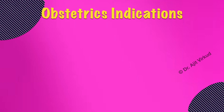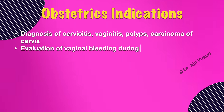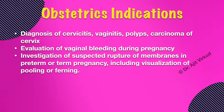Key obstetric indications for per speculum examination include diagnosis of cervicitis, vaginitis, or pregnancy-related cervical lesions like polyps or ectropion. Evaluation of vaginal bleeding during pregnancy, for example threatened miscarriage, placenta previa, and antepartum hemorrhage, to localize source and assess cervical changes. Assessment of abnormal or suspicious vaginal discharge suggestive of vaginal infection, premature rupture of membranes, or sexually transmitted infections.